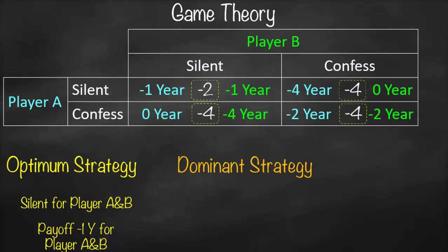We need to find the dominant strategy — the best strategy for each player if they cannot collaborate. For player B: if player B stays silent regardless of what player A does, the total is negative one plus negative four, which is negative five. If player B confesses regardless of what player A does, the total is zero plus negative two, which is negative two.